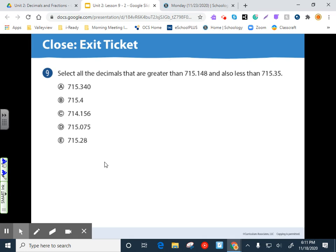Question nine's interesting. So bear with me on this one. So select all the decimals that are greater than 715 and 148 thousandths and less than 715 and 35 hundredths. So down below in your workspace, I want you to write down 715.148 and put this symbol there. Because that means this number is less than anything that's here. And I'm going to put a big old question mark. But we also want it to be greater than or less than this number.